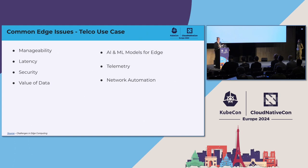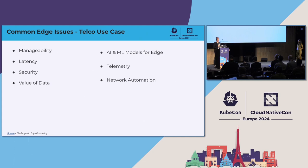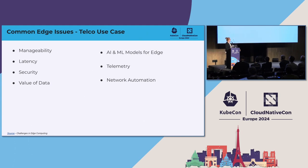The next challenge is AI and ML models at the edge. Each edge location may have a different use case, so the number of models you need with different data starts to grow exponentially. Telemetry is also key — you need to be able to gather, store, pre-process, and forward metrics before you lose the value of that data. And then network automation: you need to be able to apply configurations even during intermittent connectivity so that you're meeting your customers' SLAs and using your resources correctly.